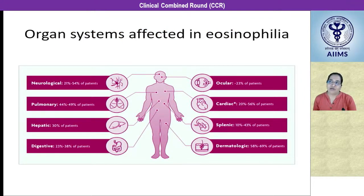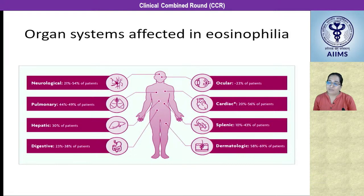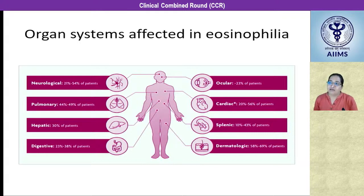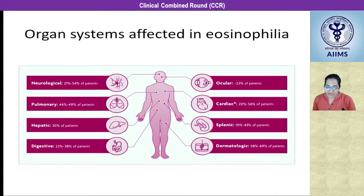Regardless of the cause of eosinophilia, virtually any system can be infiltrated by eosinophils. The cardiovascular system is the most important cause of mortality. Hypereosinophilia can cause endomyocardial fibrosis, myocarditis, valvular dysfunction, and restrictive cardiomyopathy. The pulmonary system can be involved with pulmonary fibrosis, pleural effusion, or pulmonary embolism. In the nervous system it can cause stroke, TIA, or neuropathy. In the hepatic system it can cause Budd-Chiari syndrome, eosinophilic cholangitis presenting as jaundice, or hepatitis. In fact, it can involve any system of the body.